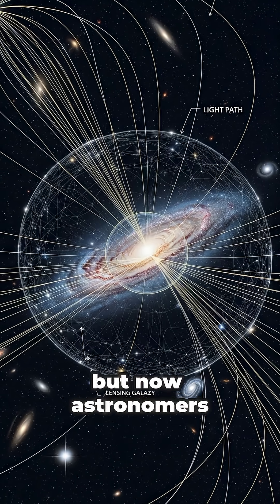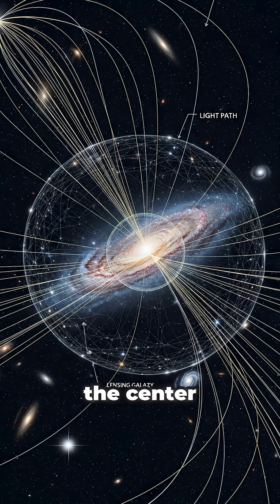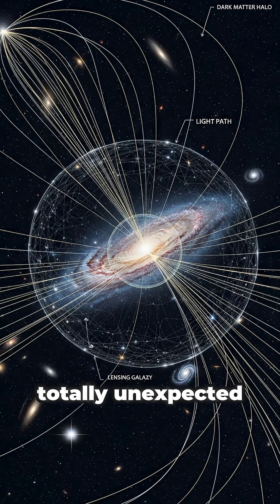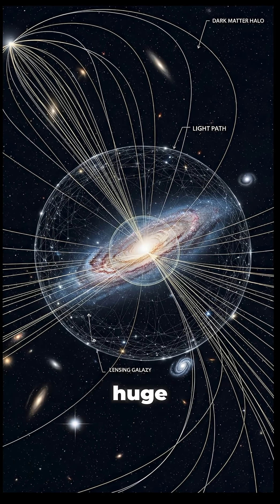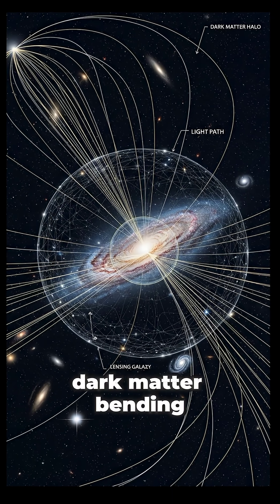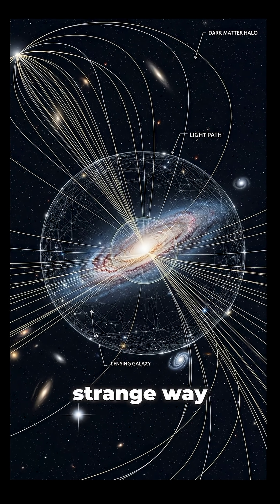But now, astronomers have found a fifth image in the center, totally unexpected. This extra image suggests there's a huge, invisible halo of dark matter bending light in a strange way.